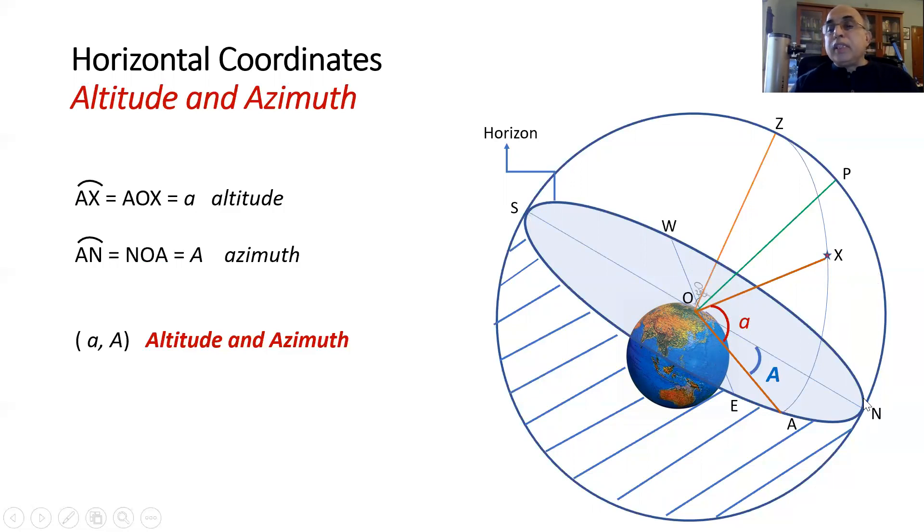If the observer is facing north, 90 degrees on his right will be east and 90 degrees on his left will be west.